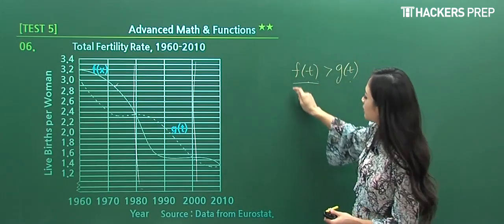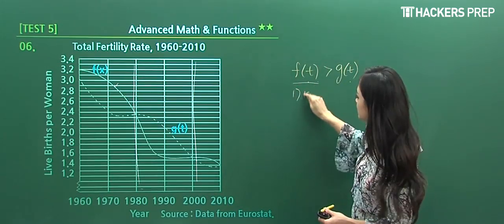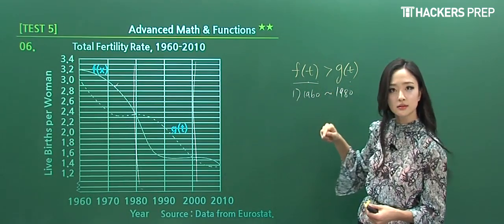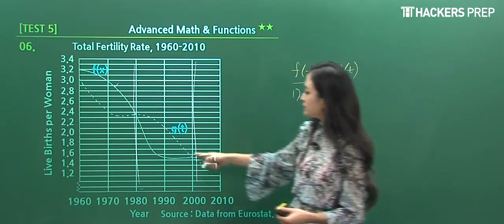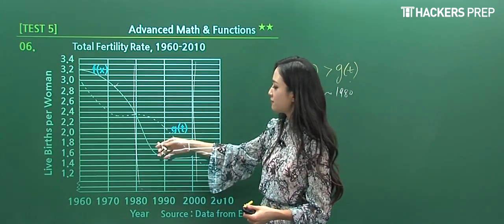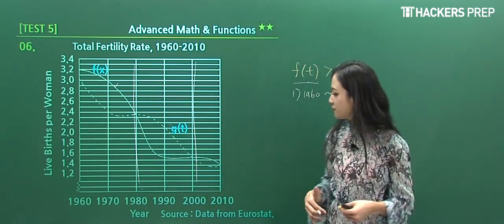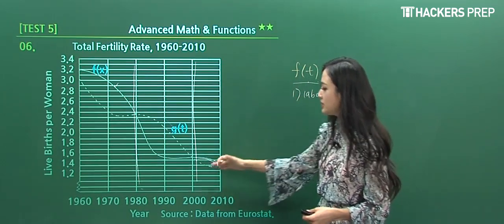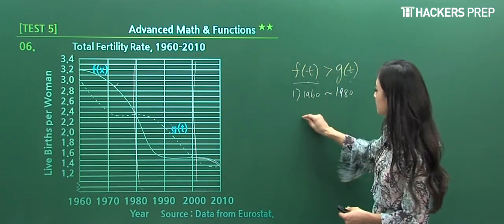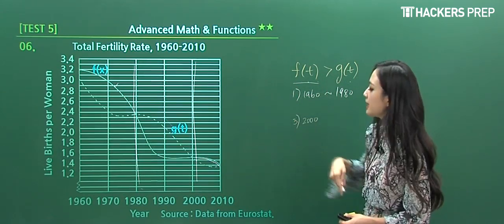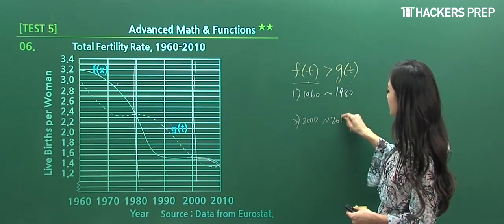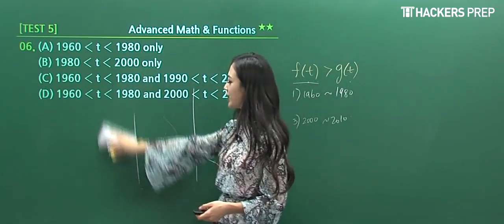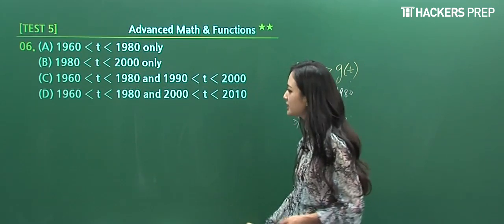The first period that satisfies this condition is from 1960 to 1980. For the second time period, g(t) is actually above f(t), so this doesn't satisfy our condition. For the final portion, the solid line f(t) is indeed above g(t), so from 2000 to 2010 is what we want as well. Let's look at the answer choices and see which includes all of this.